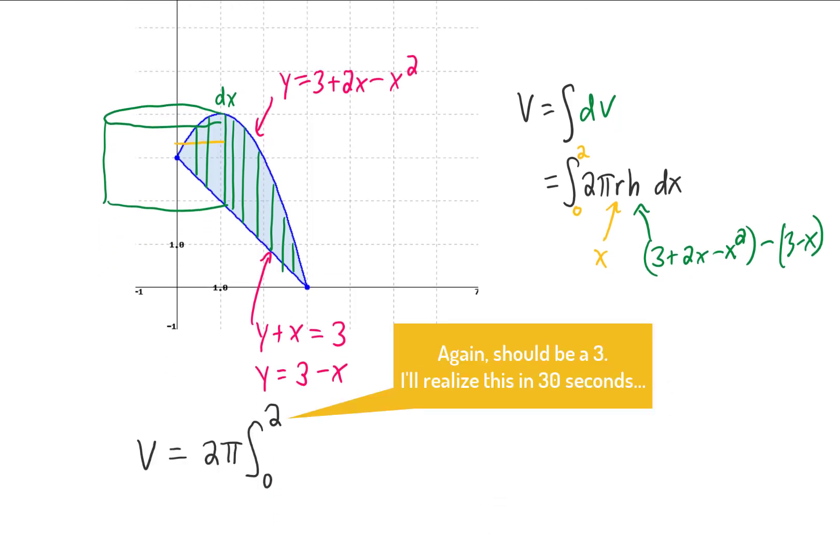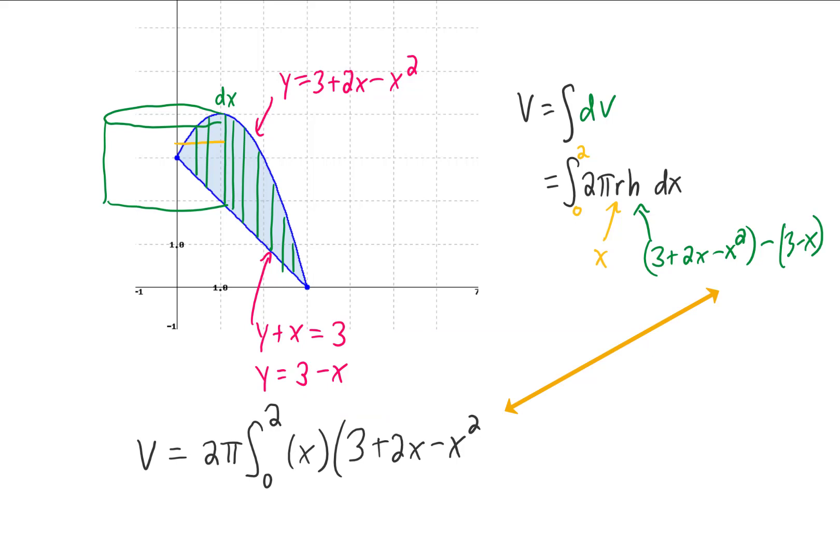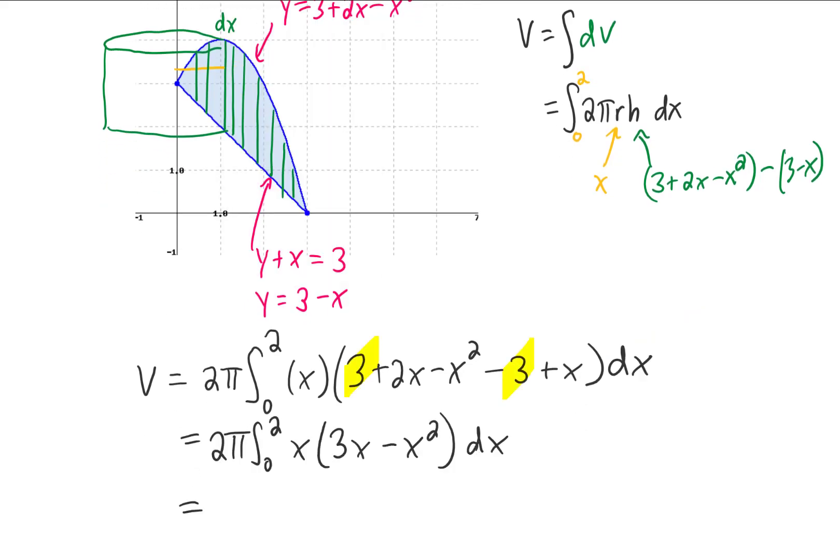I'm going to pull the 2π out. Our r we decided was just x, and our h we decided was 3 + 2x - x², and if we distribute that minus sign, we get -3 + x. We can simplify that integrand a little bit. The 3's you'll notice cancel.